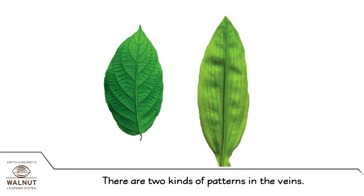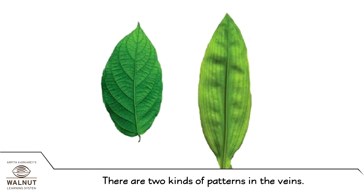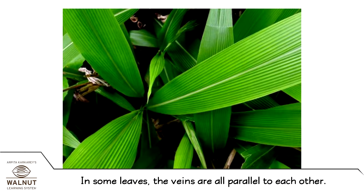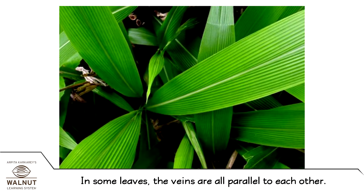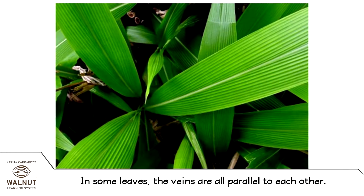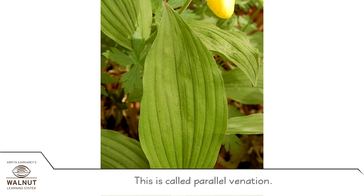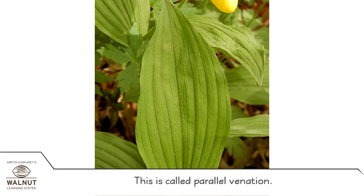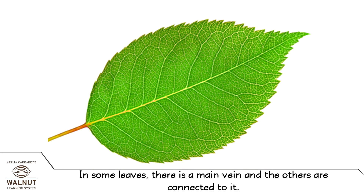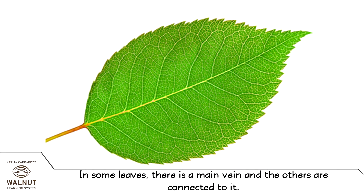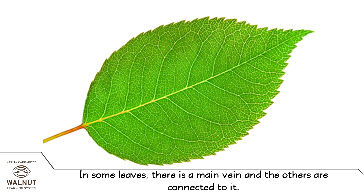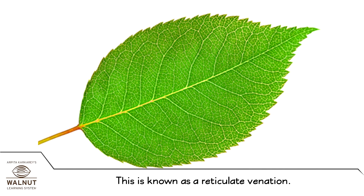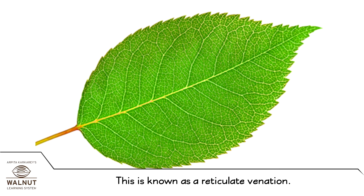There are two kinds of patterns in the veins. In some leaves, the veins are all parallel to each other — this is called parallel venation. In some leaves, there is a main vein and the others are connected to it — this is known as reticulate venation.